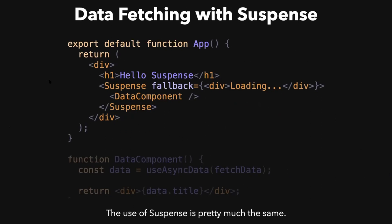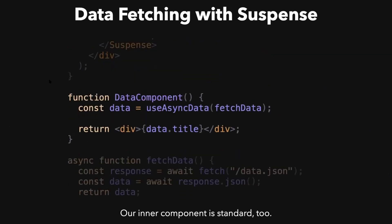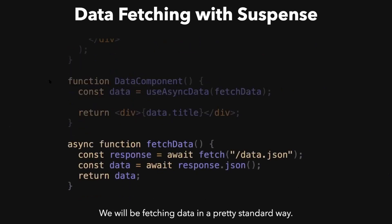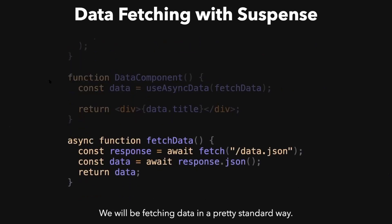As before, the Suspense component usage is very much the same — in fact, this code block is exactly the same as before, except I have a data component instead of a lazy component. That inner component is a little different; it's more standard in this case. It's just a component. I've got this custom useAsyncData hook that I wrote, which we'll cover in a moment. The actual fetching is just a standard fetch or whatever you do to get your data — as long as it's got a promise, it will work with this.